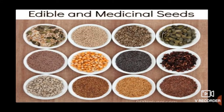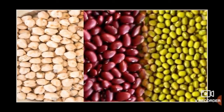Some plants have edible seeds. We often eat them in the form of cereals, grains and pulses. Rice, wheat and barley are called cereals. Seeds of cereals such as wheat and corn are ground to get flour. Cereals are also called food grains. The edible seeds of plants such as green gram, kidney beans and chickpea are called pulses.